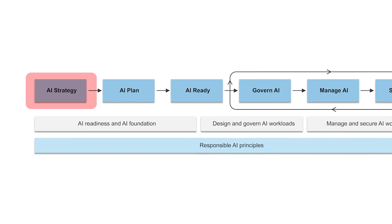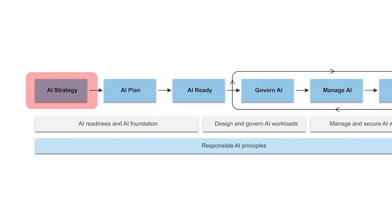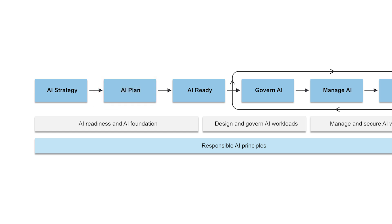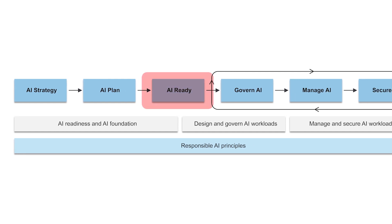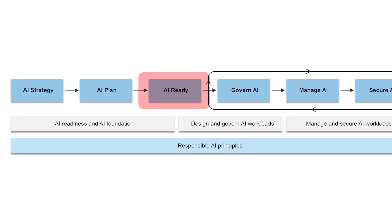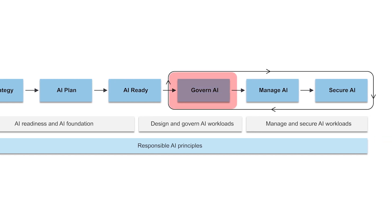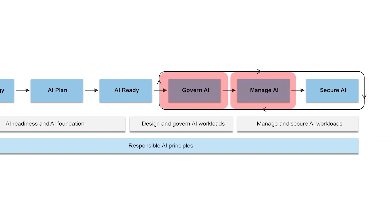First, you develop an AI strategy. As part of that strategy, you're going to identify your use cases, look at the goals you have for AI, and then determine whether you're going to build or buy an AI solution for each use case. Then you develop an AI plan to move those use cases towards production. And if you decide you want to build in Azure for a particular use case, you're also going to need that additional step of getting AI ready — think of this as preparing your cloud environment to host your AI workloads. And then everyone, regardless of what type of AI you adopt, is going to need to establish processes to govern AI, manage AI, and secure AI. These are iterative and ongoing processes.